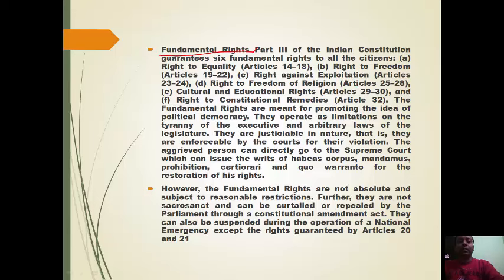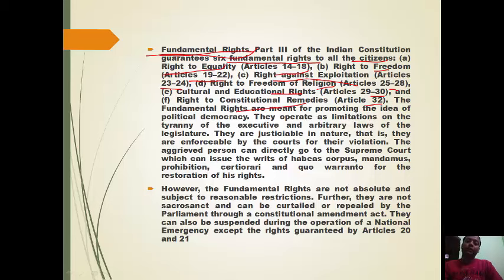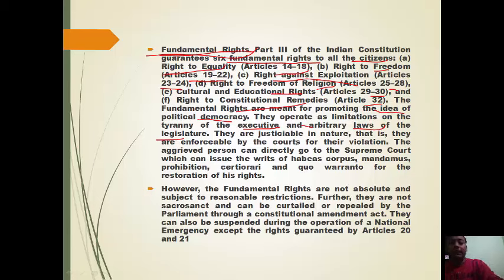The Constitution guarantees six fundamental rights: Right to Equality (Articles 14-18), Right to Freedom (Articles 19-22), Right against Exploitation (Articles 23-24), Right to Freedom of Religion (Articles 25-28), Cultural and Educational Rights (Articles 29-30), and Right to Constitutional Remedies (Article 32). These promote political democracy, operate as limitations on executive tyranny, and are justiciable — enforceable by courts for their violation.